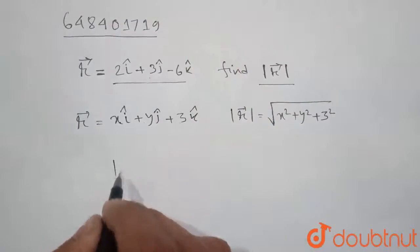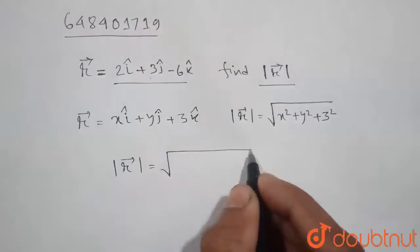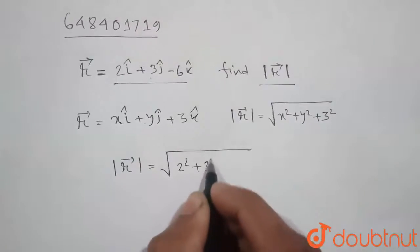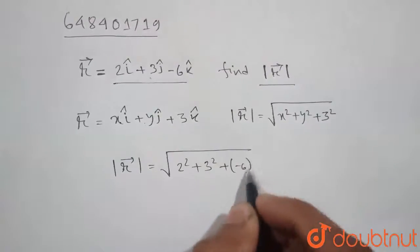Then we can write modulus of r will be equal to 2 square plus 3 square plus minus 6 square.